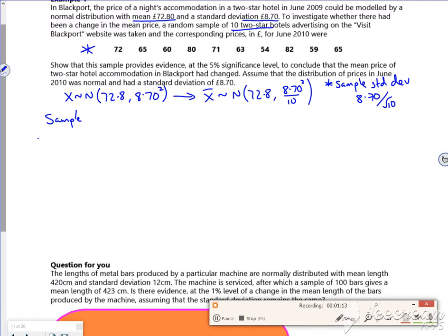Let's set it up then. The null hypothesis H₀ is that μ is £72.80. The alternate H₁, so what's it saying? Show that this sample provides evidence at the 5% significance level to conclude that the mean price of two-star hotel accommodation has changed. So that's going to be not equal to because it's vague, it's going to be a two-tail, so £72.80.